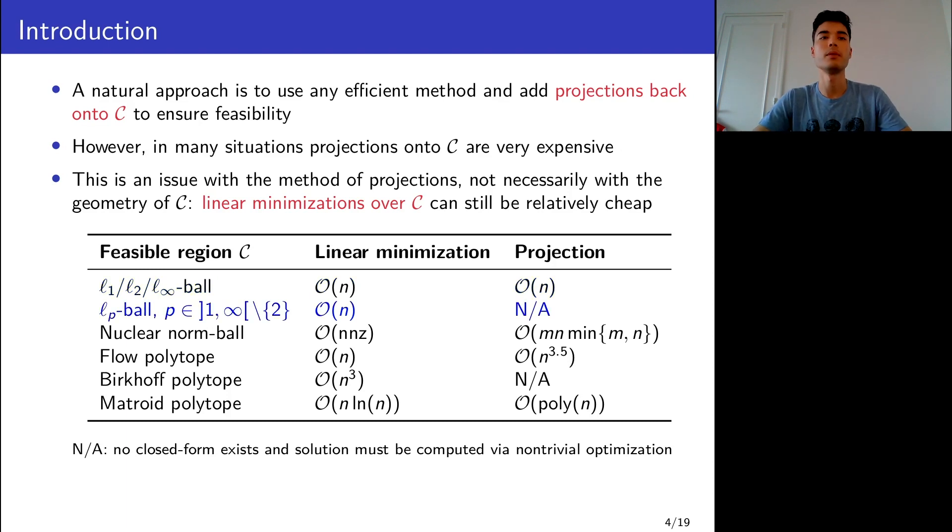If you look at the Lp ball where p isn't 1 or infinity, then projections are hard to compute, whereas linear minimizations are available in closed form. Perhaps the most striking example is that of the nuclear norm ball, where a projection requires a full SVD, but linear minimization only amounts to computing the top pair of singular vectors, which has complexity linear in the number of non-zero entries in a matrix.